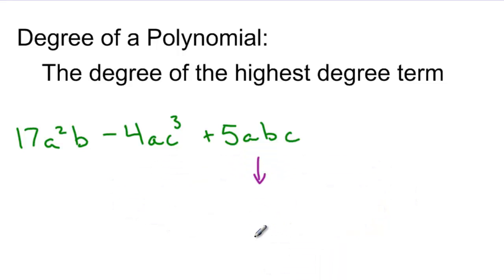When I look at this polynomial, if I look at the last term first, I can see that it has three variables, each with degree 1. So, the last term has an overall degree of 3. My middle term, the variable a has a degree of 1. The variable c has a degree of 3. So, overall that's degree 4.